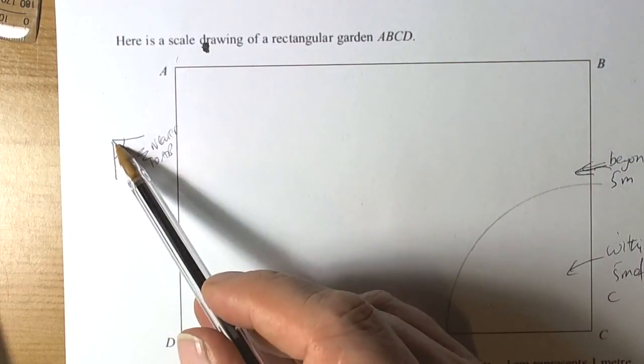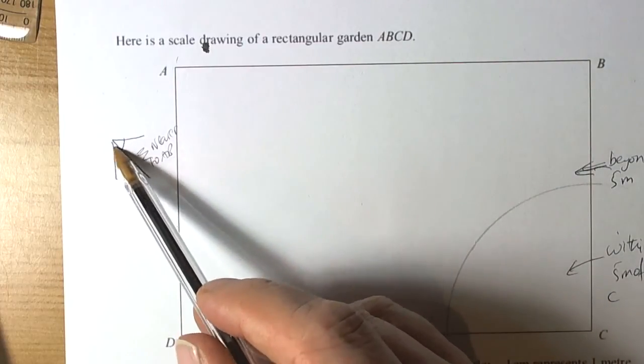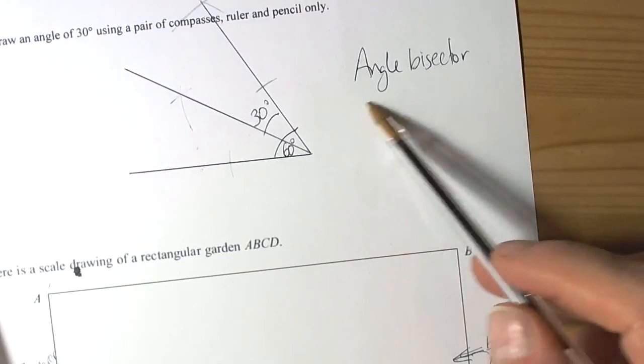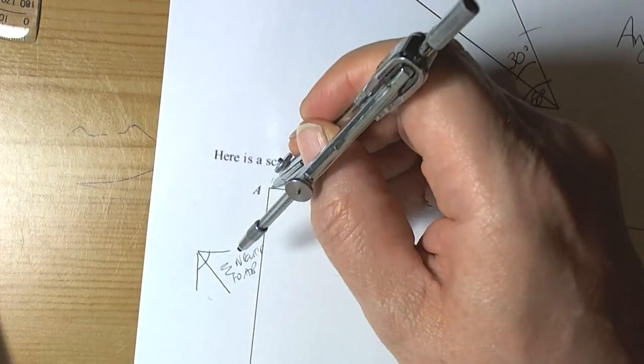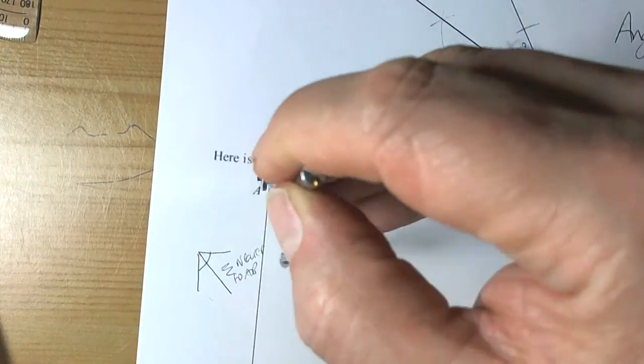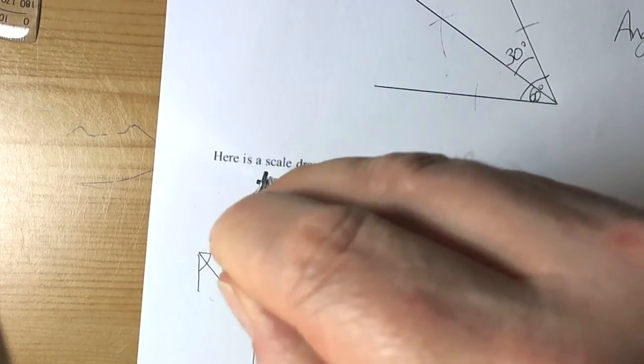It's an angle. We want to cut it in half. So, again, it's going to be an angle bisector we draw. Again, we get our compasses open at a comfortable distance.